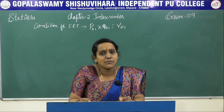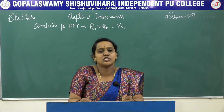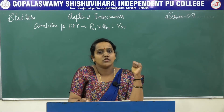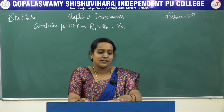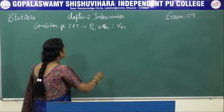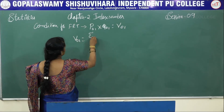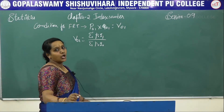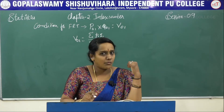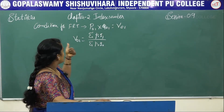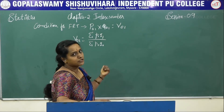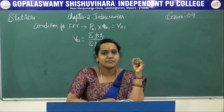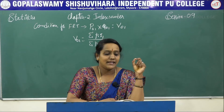While solving problems, we know that price multiplied by quantity is always equal to value. The value index number formula is: V01 = summation of P1×Q1 divided by summation of P0×Q0, which is the ratio of current year price-quantity to base year price-quantity.